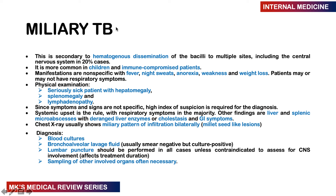Miliary TB represents hematogenous spread to different organs — spleen, liver, lungs — and involves the CNS in 20% of cases. It is common in children and the immunocompromised. Patients have constitutional symptoms: fever, night sweats, anorexia, weakness, weight loss, with or without respiratory symptoms. On examination they are very sick with hepatomegaly, splenomegaly, and lymphadenopathy. Develop a high index of suspicion. Other findings include liver and splenic micro-abscesses, deranged liver enzymes, cholestasis, and GI symptoms.